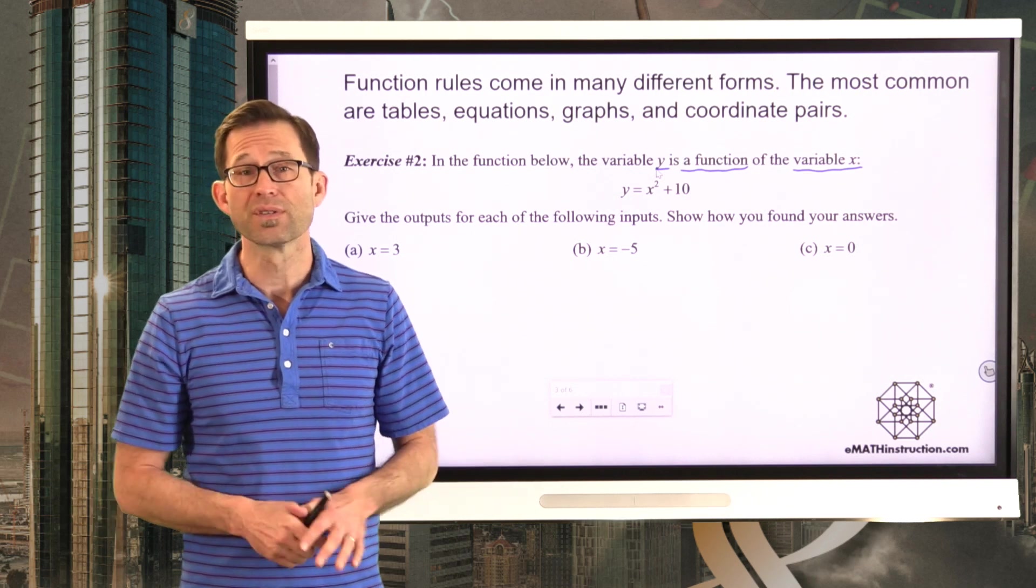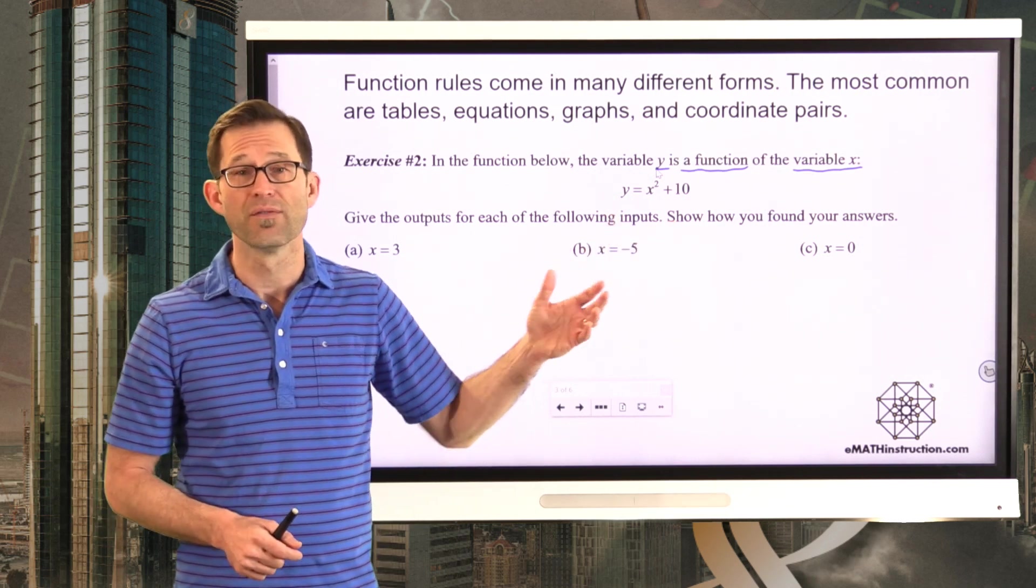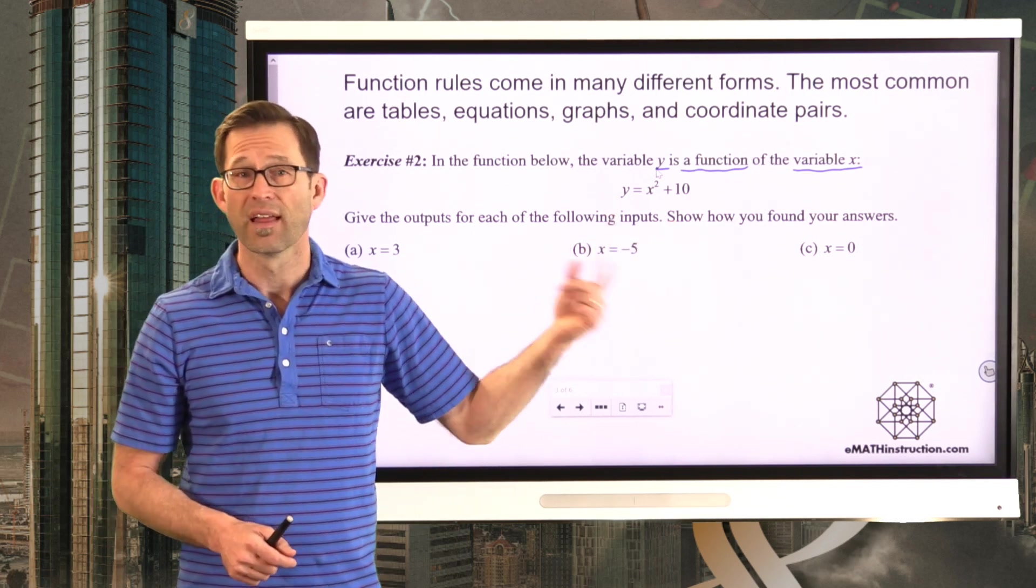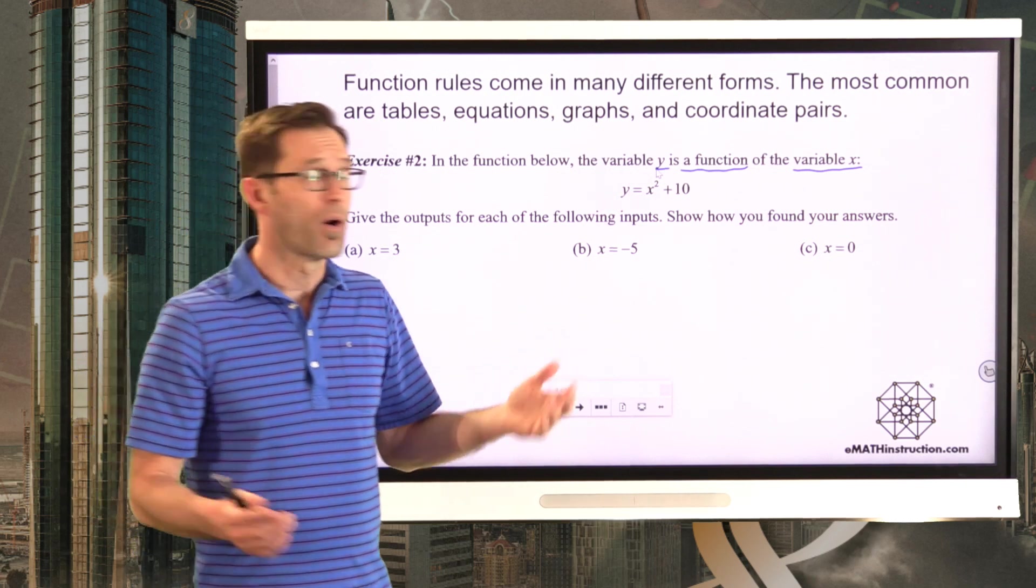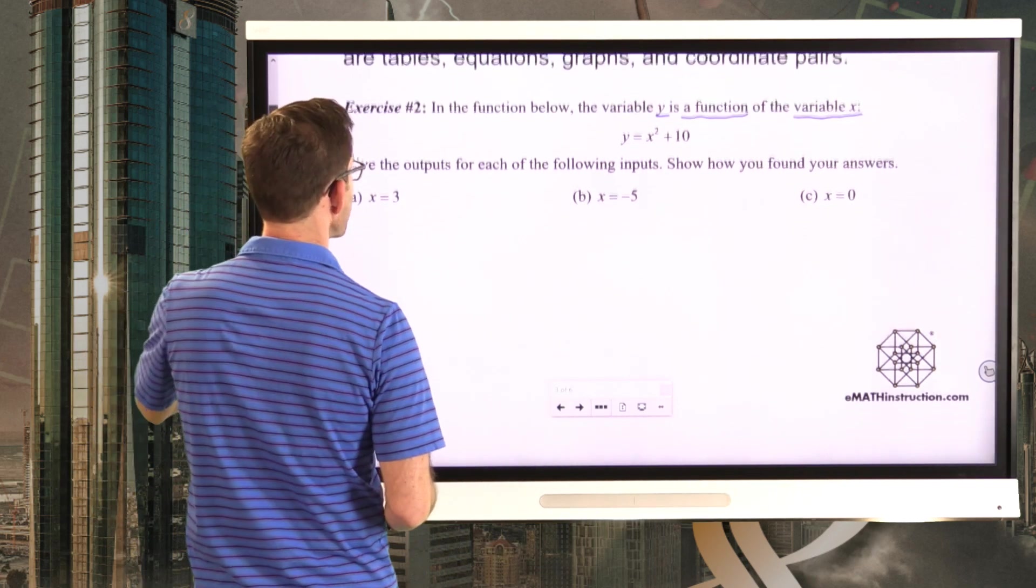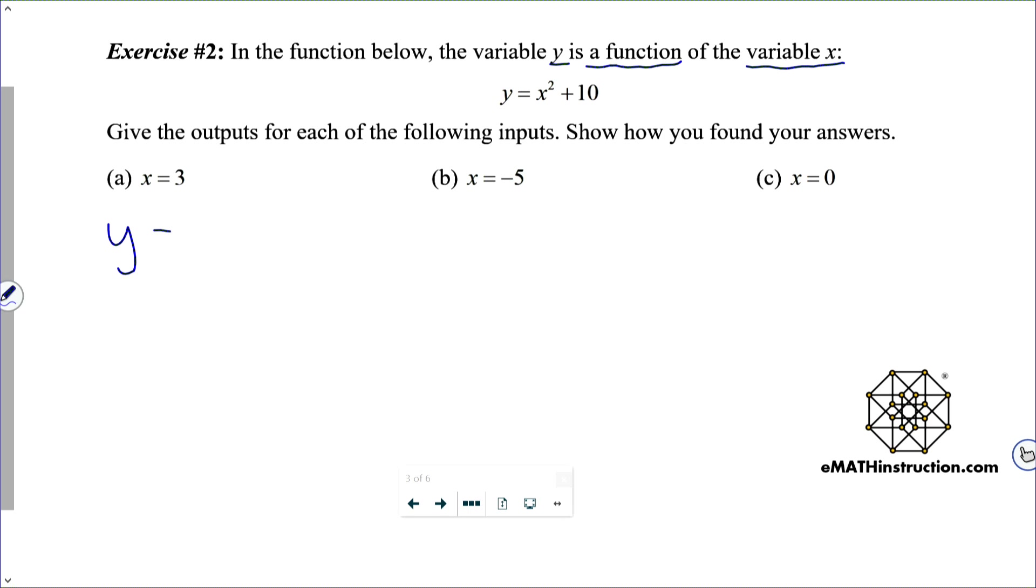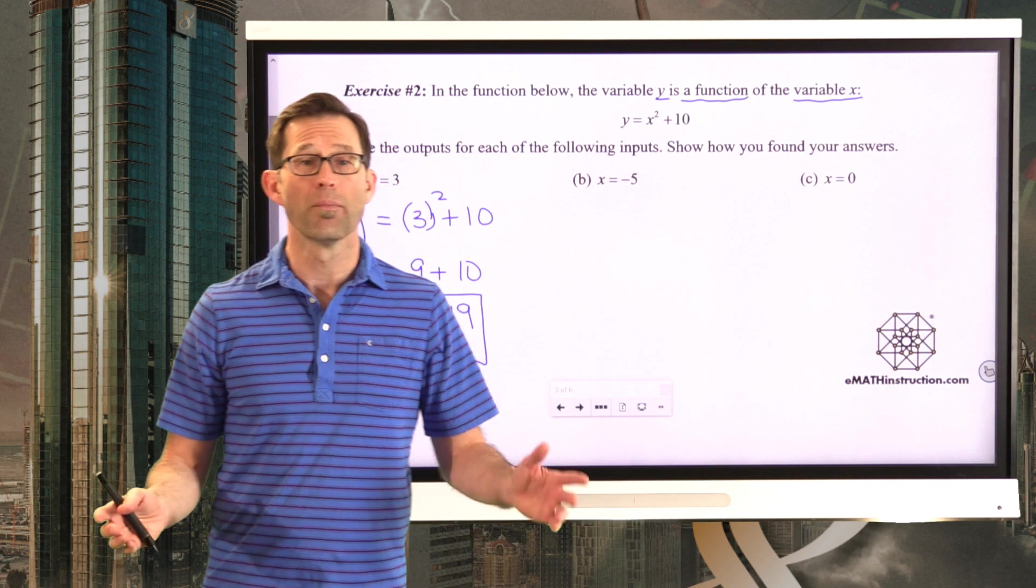Now, it's pretty simple. This is no different than when we were plugging values of x into anything else and getting a value of y. All we need to do, let's say for an input of x equals 3, we're just going to take the 3, place it into the equation, and evaluate the output. 3 squared is 3 times 3. That's 9. And then, of course, 9 plus 10 is 19. So when the input is 3, the output is 19.